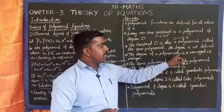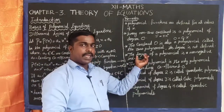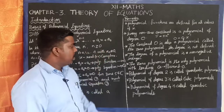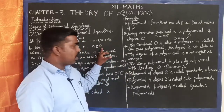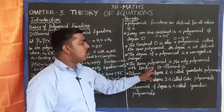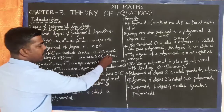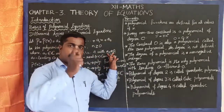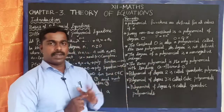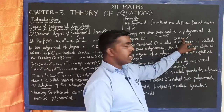The degree of a polynomial is a non-negative integer, so n is greater than or equal to 0; negative numbers are not allowed. The zero polynomial is the only polynomial with leading coefficient 0; for all other polynomials, the leading coefficient aₙ is not equal to 0.